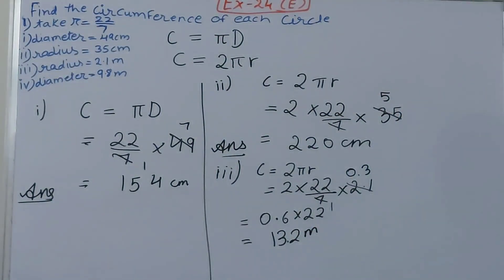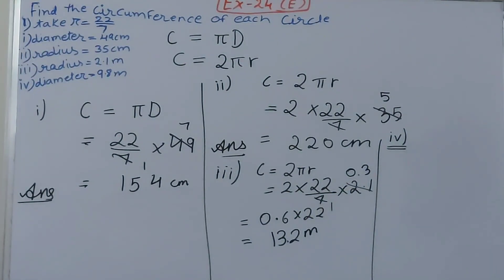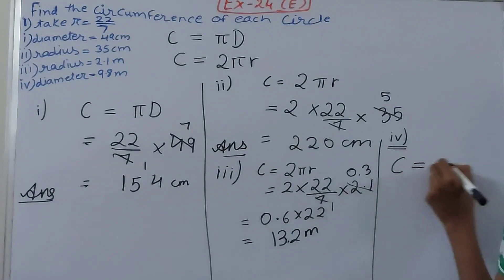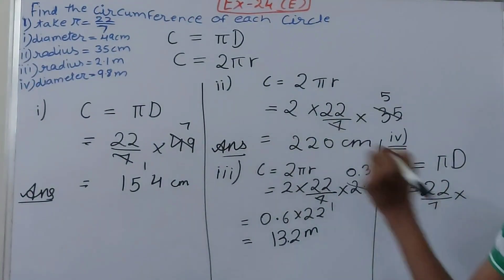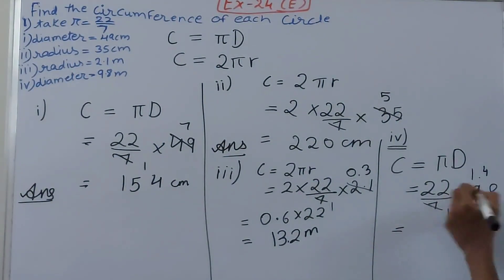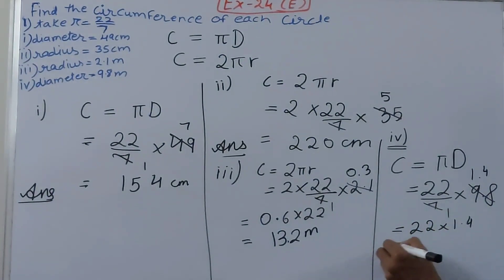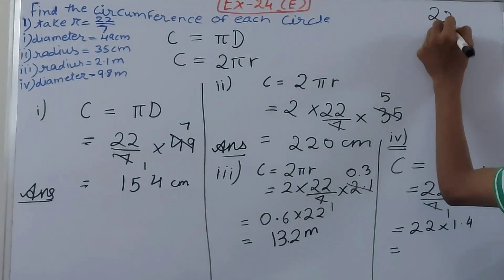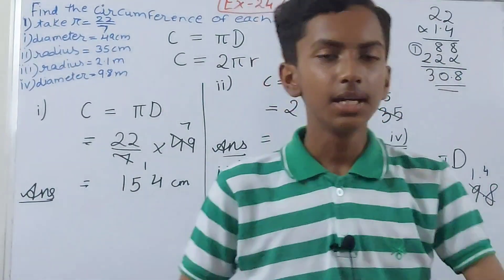Fourth one: diameter is 9.8 metres, so we use C = πd. Circumference equals (22/7) into 9.8. Cancelling 7 and 9.8 gives 1.4, and 1.4 into 22 equals 30.8 metres. That is the circumference for the fourth part.